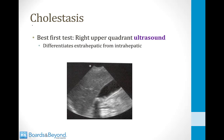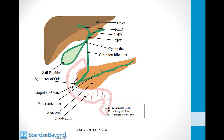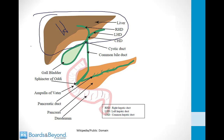Once you identify the cholestatic pattern of LFT abnormalities, the best first test is an imaging test of the bile ducts — usually a right upper quadrant ultrasound. This will tell you whether the bile ducts are dilated or normal, differentiating extrahepatic causes of cholestasis from intrahepatic causes. If a gallstone is lodged in the common bile duct, the bile ducts will become very dilated and distended, which you can see on imaging. On the other hand, there are intrahepatic processes that primarily affect the bile ducts inside the liver; if one of those processes is occurring, the bile ducts will appear normal and you know to look inside the liver for the source of biliary obstruction.